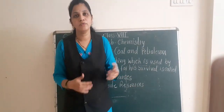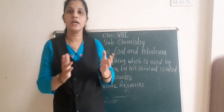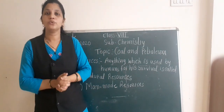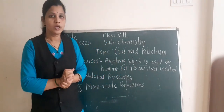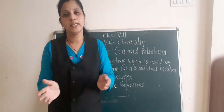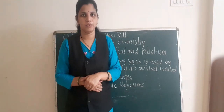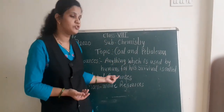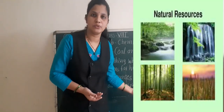For example, air, water, light — these all are things we are using for our survival, so they are known as resources. These resources are divided into two categories: the first one is natural resources and the second one is human-made resources.